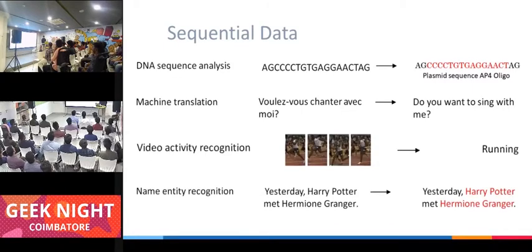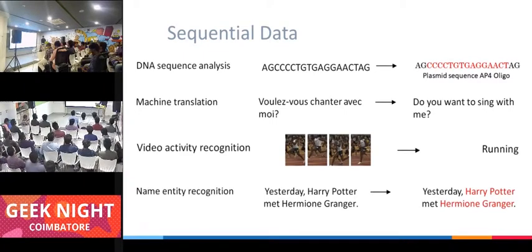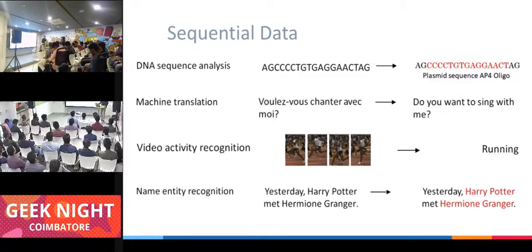Another use case is DNA sequence analysis. There are four letters — A, C, T, and G — and from the sequence the network can predict what kind of DNA it is. These are areas where a convolutional neural network is not the right option; you need something better capable of handling sequence data. Machine translation is also a major one — Google's NMT (neural machine translation) is the state of the art right now, able to understand grammar from hundreds of thousands of examples.